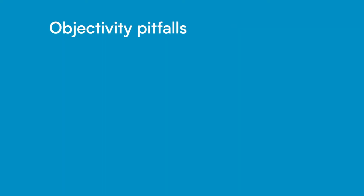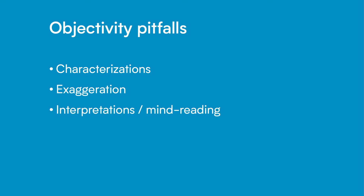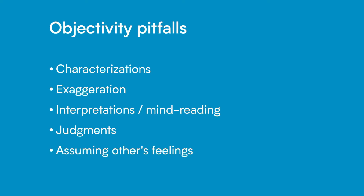There are five types of pitfalls for non-objective language that commonly occur and that we need to watch out for: characterizations, exaggerations, interpretations or mind reading, judgments, and assuming others' feelings. We'll go into detail of each of these one by one and show you some examples.